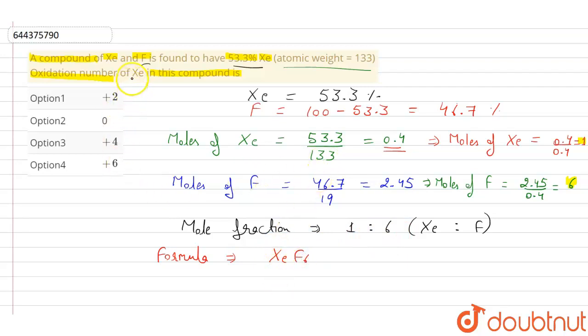Now the question is asking the oxidation state of xenon in this compound. To find out the oxidation state, let the oxidation state of xenon be x. We know that fluorine is the most electronegative element and its oxidation state is always minus 1.